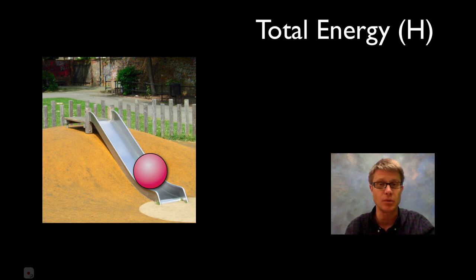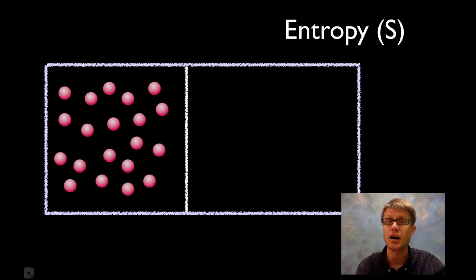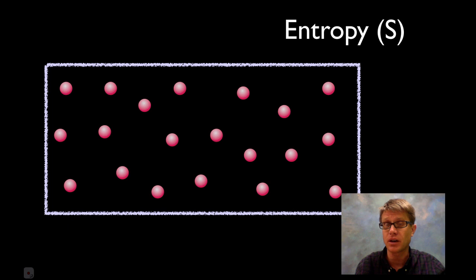Let's say we have a number of molecules in a closed container. Think of these as gas molecules moving around. Let's say I remove one of the walls inside this container. Since they're randomly moving around, they're going to spread out covering that area.